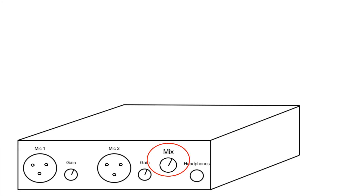With routing software, you can do things like send input channel one to output channel three if you wanted to. You would also control your zero latency monitoring — also called direct monitoring — through that software. And some interfaces don't have any software routing capabilities; they just go straight into your DAW and they'll have your direct monitoring controls as physical knobs on the front panel of the interface itself.